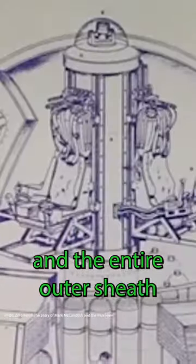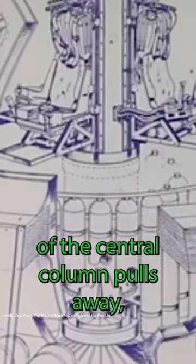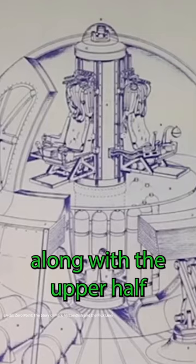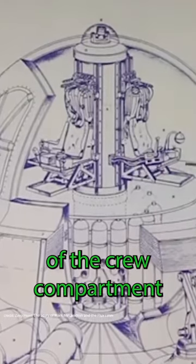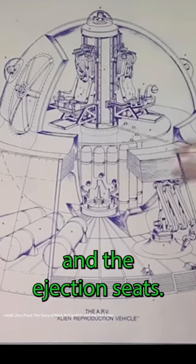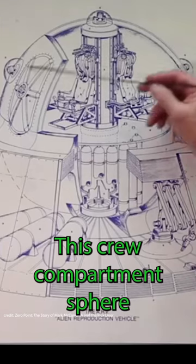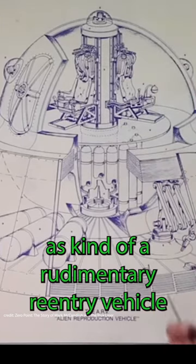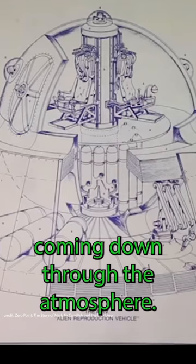The entire outer sheath of the central column pulls away along with the upper half of the crew compartment and the ejection seats. This crew compartment sphere can actually function as a rudimentary reentry vehicle coming down through the atmosphere.